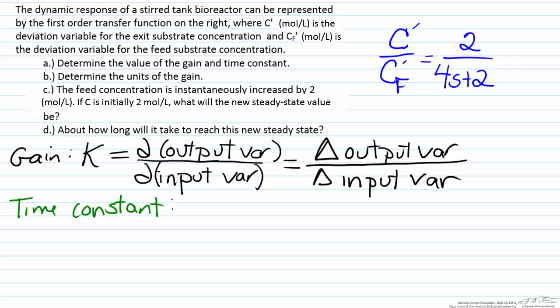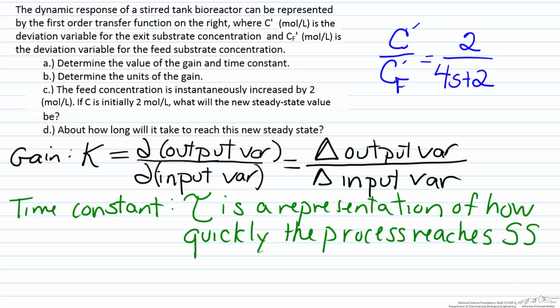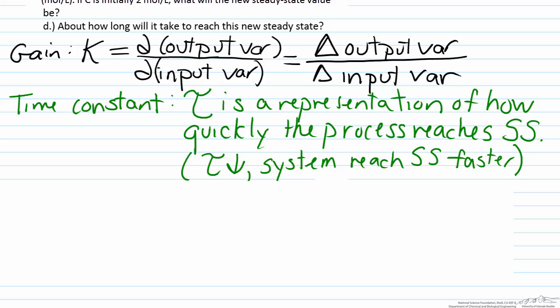The time constant, which is represented by tau, is a representation of how quickly the process will reach its steady state. So the quicker the process reaches steady state, that is indicated by a lower value of tau. So the important part here is, as tau goes down, the system reaches its steady state faster.